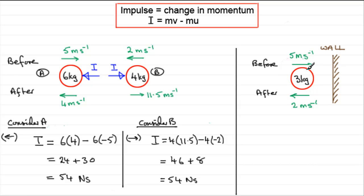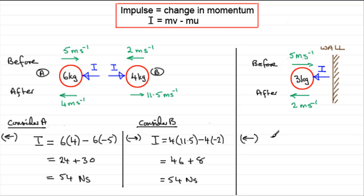What about this example where we've got a particle hitting a fixed wall? Before the impact it's moving at 5 metres per second. It hits the wall and rebounds with a speed of 2 metres per second. The ball experiences a thump — an impulse — in the direction away from the wall, which we call I. To work out I, we need a positive sense, and I'll take the positive sense in the direction of I. I always encourage you to do that for any question on impulse.